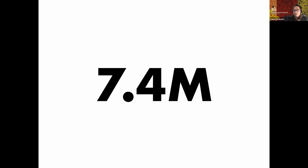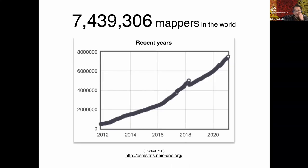I joined the OpenStreetMap community in 2008, and every year that open community has been growing. I checked the numbers at the end of January 2021 — the OpenStreetMap community now has 7.4 million mappers in the world. This is the unique OSM account number, and this graph shows the extending of the community over time. Maybe I guess next year we will reach eight or nine million mappers.